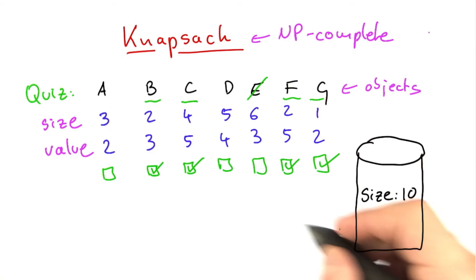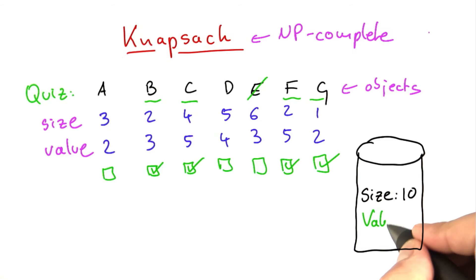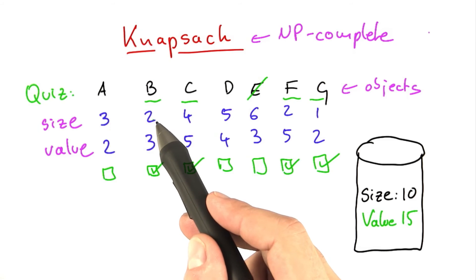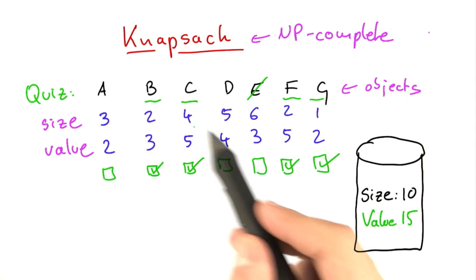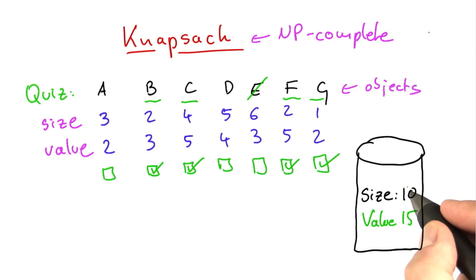And for that, you get a total value of three plus five plus five plus two. So you get a value of 15 in your container. Actually not using up all the space in the container because you only have size 2, 4, 2, and 1, which is a total size of 9. So with a container of size 10, you can carry a value of 15 given these objects over here.